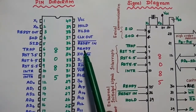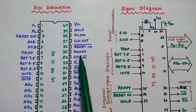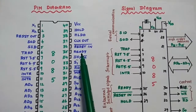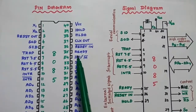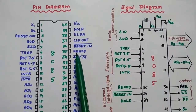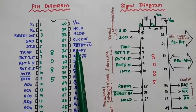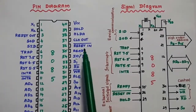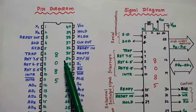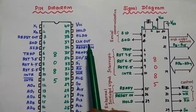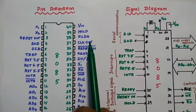The next pin is the Ready signal. Whenever the Ready signal is high, the device is ready to transmit or receive data; if it is low, the CPU has to wait. Next is Reset In, which resets the microprocessor. After that is Clock Out, which provides the system clock for external devices connected with the microprocessor.